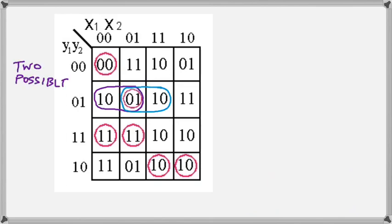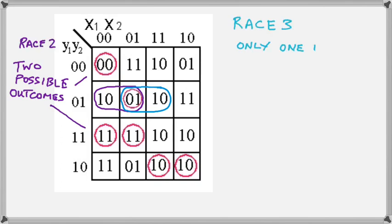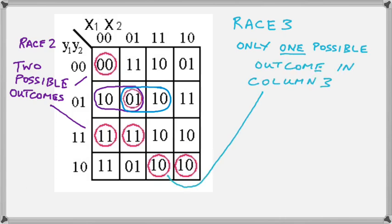Two possible outcomes mean critical. A single outcome, as in race 3, no matter what happens in race 3, we are going to have a single outcome. We are going to end up with stable state 2, which is in the fourth row.